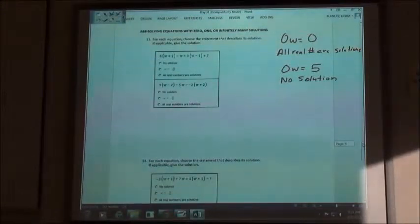So those are our two weird cases. If we get a 0w, it's either going to give us all real numbers are solutions or no solutions. Otherwise, it'll solve like it normally solves.